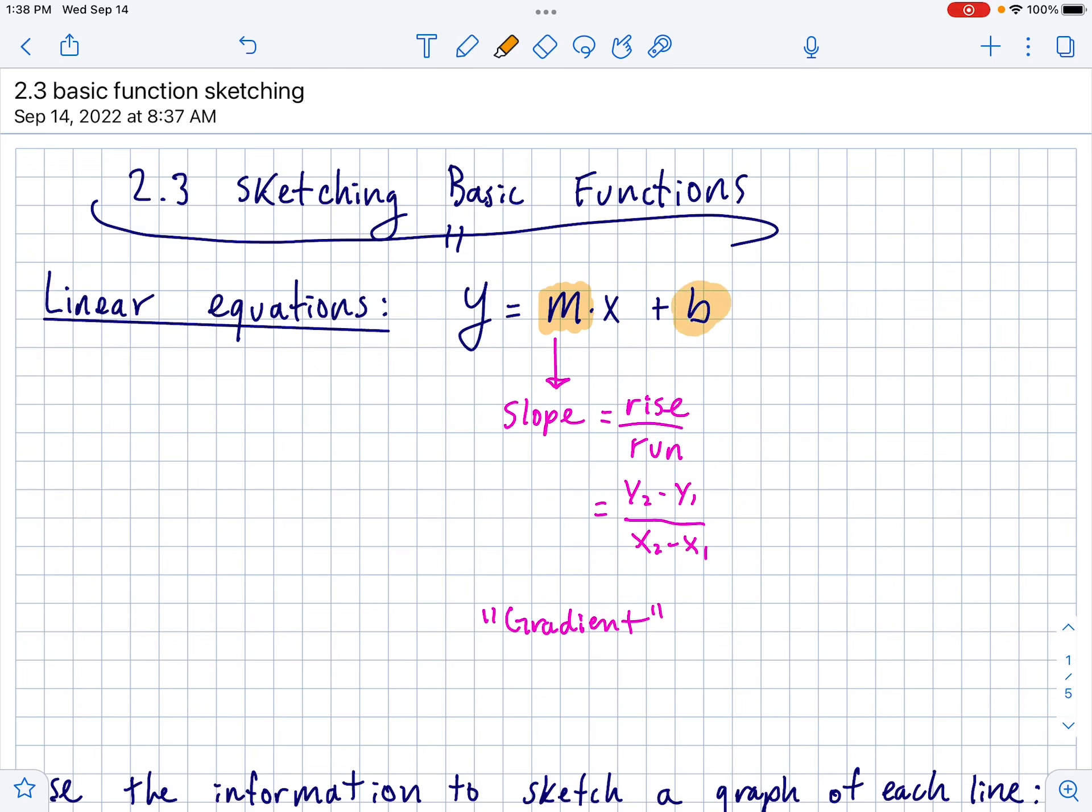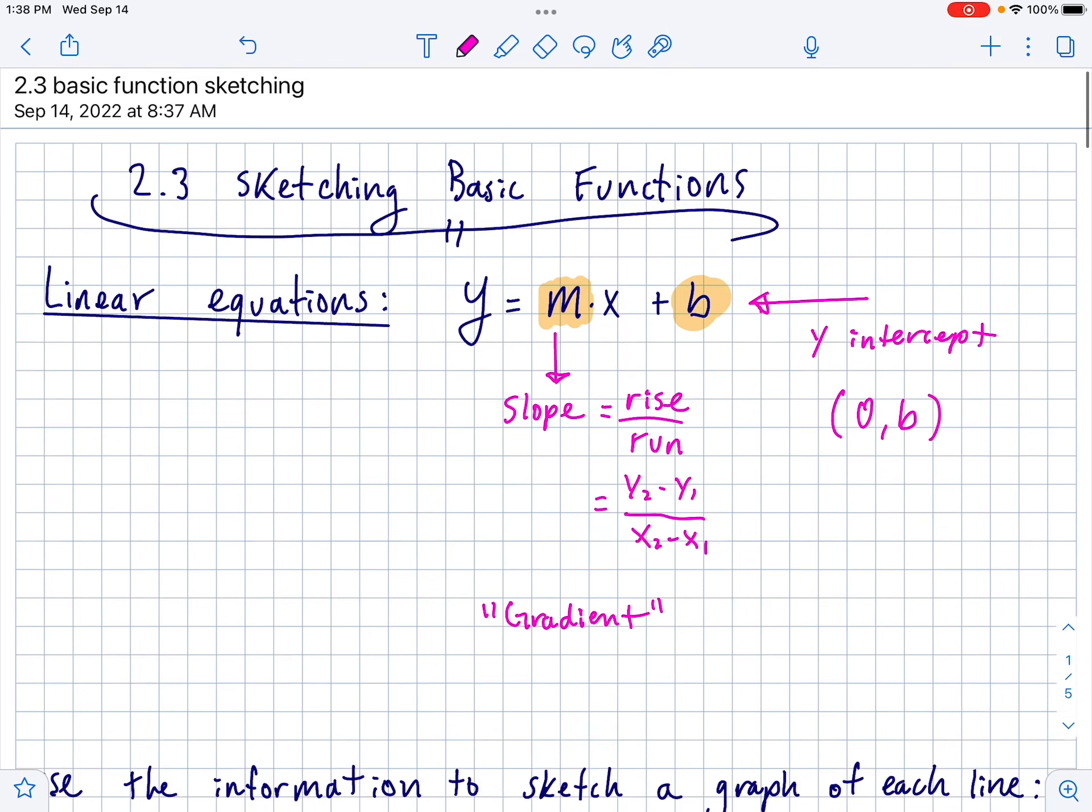This part of the equation, if it's in y equals mx plus b form, is your y-intercept. Which is usually like b, comma, 0. No, that's the x-intercept, my bad. It's 0, comma, b. There we go. So if you put an x of 0 into it, a b comes out of it.